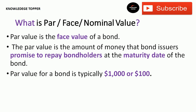Par value is the face value of a bond. Par value is the amount of money that bond issuers promise to repay bondholders at the maturity date of the bond. Par value for a bond is typically $1,000 or $100. Remember, many students get confused and think face value, par value, and nominal value are different — but they are all the same, just known by different names.